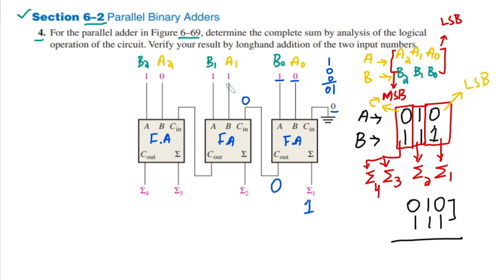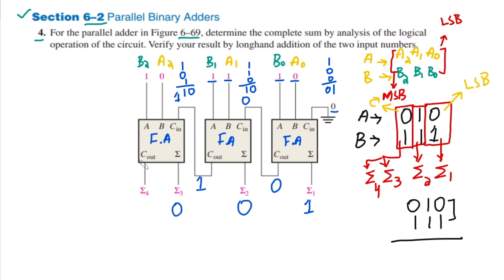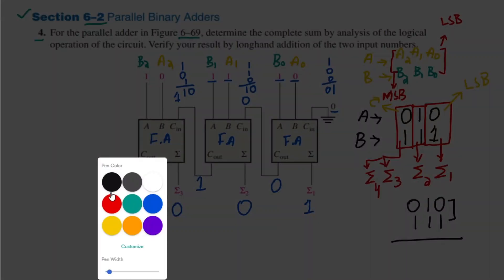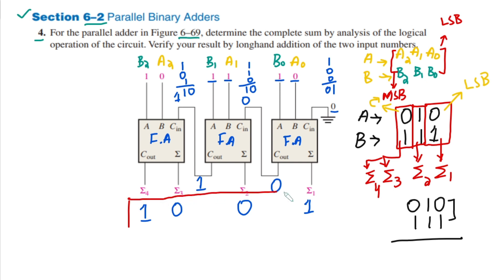For the second adder, we have A1=1, B1=1, and carry-in=0 from the first adder. So 1 plus 1 plus 0 equals 2, and in binary 2 is represented as 10. The sum bit (sigma) is 0 while the carry bit is 1, which is transferred to the carry input of the third adder. For the third adder, we have A2=0, B2=1, and carry-in=1. Adding 1, 0, 1 again gives 2, which is 10. So sigma 3 is 0 and the output carry (sigma 4) is 1. The complete result is 1, 0, 1, 0.